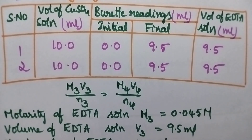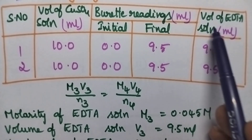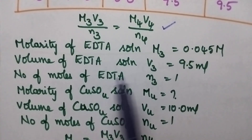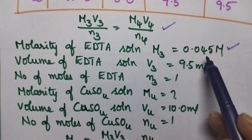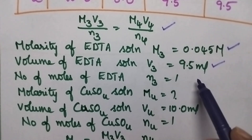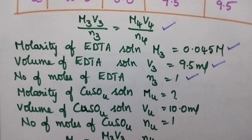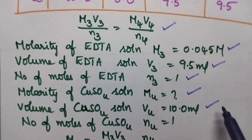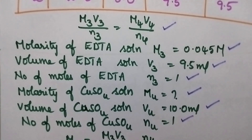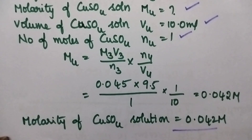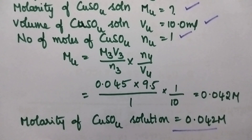The tabulation consists of volume of copper sulfate solution against volume of EDTA solution. The formula used is M3V3/N3 = M4V4/N4. Molarity of EDTA solution M3 = 0.045 M; volume of EDTA solution V3 = 9.5 ml; number of moles of EDTA N3 = 1; molarity of copper sulfate solution M4 is to be found; volume of copper sulfate solution V4 = 10 ml; number of moles of copper sulfate N4 = 1. Using M4 = (M3V3/N3) × (N4/V4), on substituting, the molarity of the copper sulfate solution is obtained as 0.042 M.